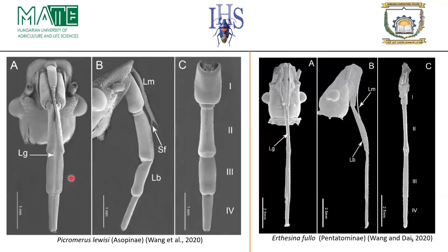The basic morphological difference between Asopinae and the other remaining members of the Pentatomidae is the mouthpart, which is four-segmented but with the first segment free and robust, making it easy to locate prey. Movement is also facilitated, and the structure is more cylindrical compared to the phytophagous species of Pentatomidae. This structure mainly characterizes the Asopinae mouthparts.